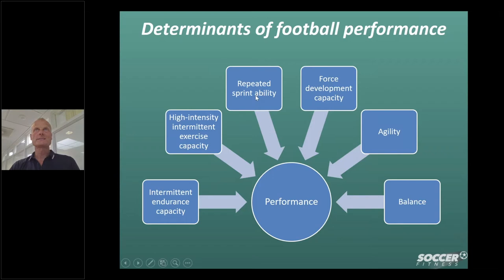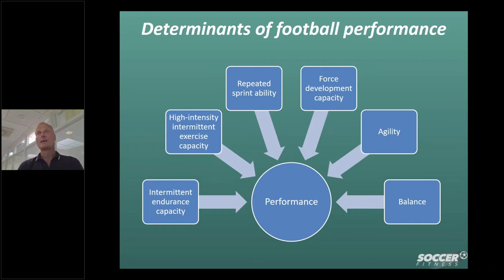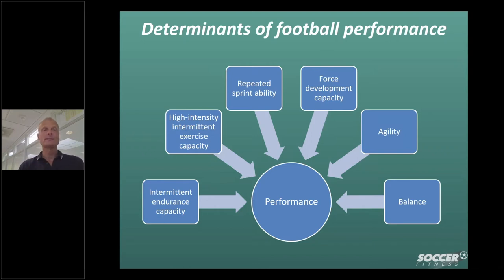We are talking about repeated sprints. A top class player is sprinting around 40 times in a game. We don't know exactly when it's going to happen because the situation may require very rapid or high speed, so the player needs a good ability to repeatedly sprint. We also talk about force development capacity because some actions require very high power output, like a jump before a header or a kick, so that ability also needs to be tested.